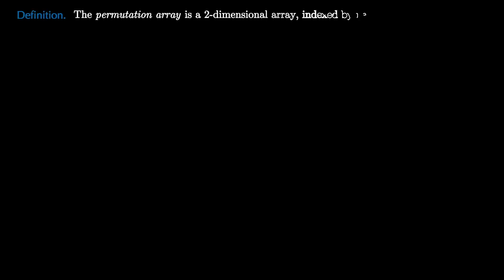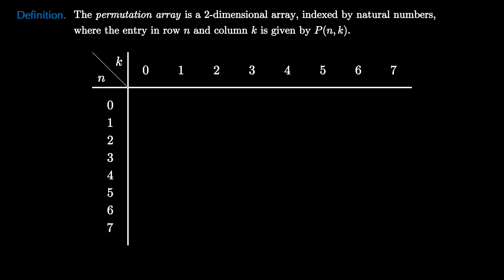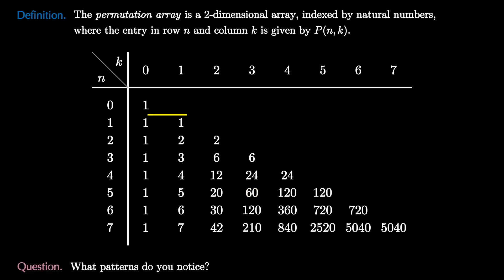The permutation array is a two-dimensional array indexed by the natural numbers starting at zero. We'll show the array only up to row 7 and column 7. The entry in row n and column k is given by the permutation number P(n,k), so it counts the number of lists of size k from an n-set. For example, in the fifth row and third column, we see the entry P(5,3), which we can compute to be 60.